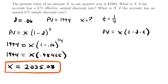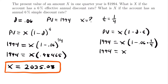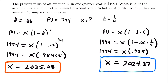Everything else is the same — present value is the same, time is one quarter year, and the 6% rate is also the same. Plugging in those values, we have 1,994 is equal to X times (1 minus 0.06 times one fourth). Simplifying: 1 minus 0.06 times one fourth gives us 0.985, so 1,994 equals X times 0.985. Dividing both sides by 0.985, we find that X is equal to $2,024.37. That is the value of X with a simple discount rate rather than an effective annual discount rate.